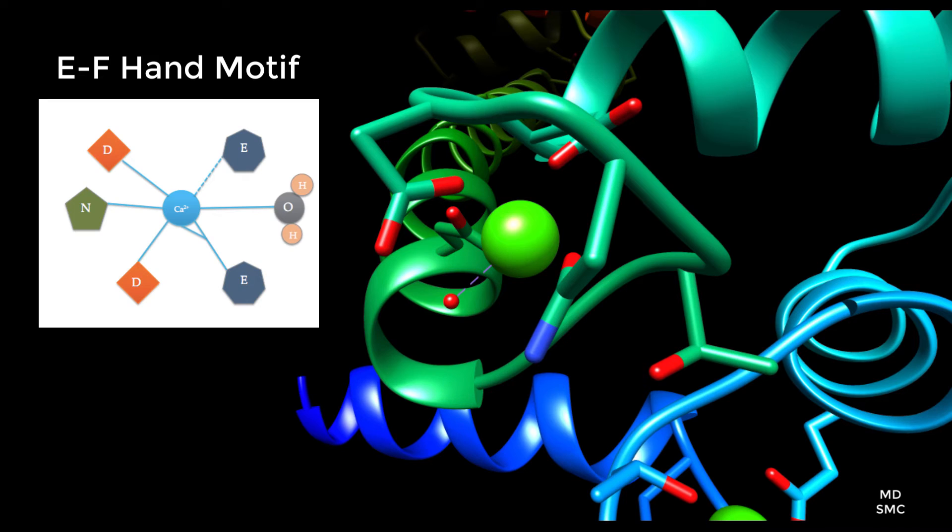This graphic is an example of the structure of an EF hand motif, where the calcium ion acts as a central metal bound to six ligands in a heptadentate system.